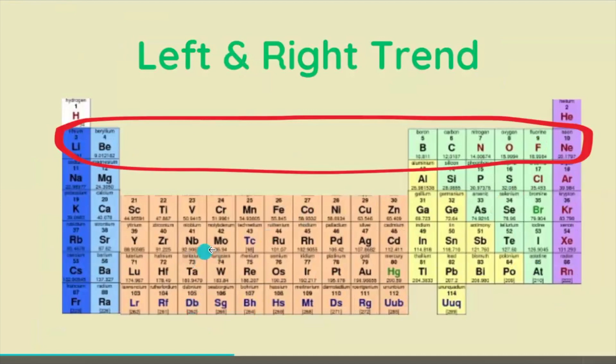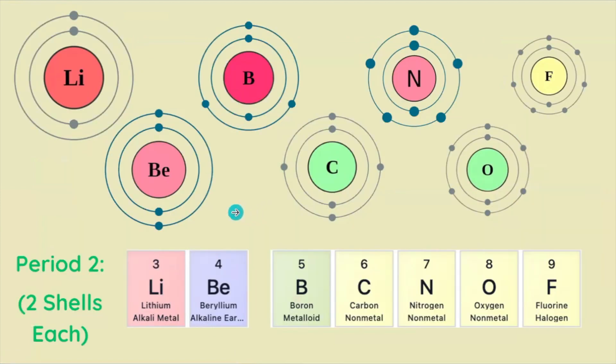What about the left and right trend? Well, within a period or row, every element has the same number of electron shells. In this case, period 2 elements have exactly two shells.